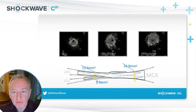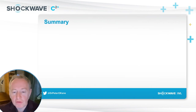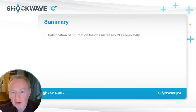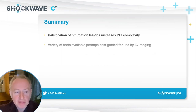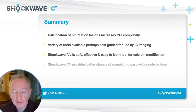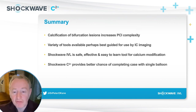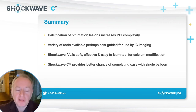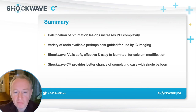Just a schematic diagram shows those measurements at the end of the case — fairly straightforward, really all made possible with the use of this balloon. In summary: calcification increases complexity in left main PCI, with many tools available, but best done with imaging. IVL is super safe with very few complications, and the great thing about the C2 plus is the extra pulses — you can take it back and ensure effective lesion preparation without having to use a second device. Thank you very much for your attention.